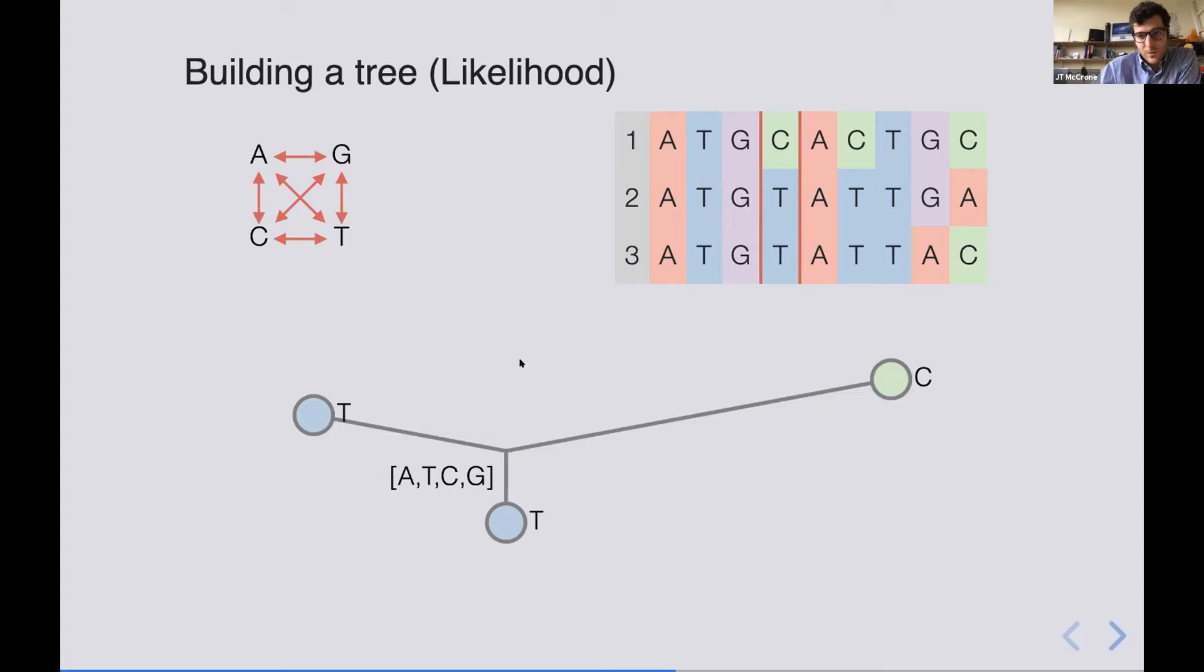And so this would suggest probably that there was a mutation here along this branch between T and C, or C and T, we don't know the direction in this case. And we can do this across all of the columns in the alignment, and we're trying to find the tree that makes all of these columns the happiest given our chosen model of substitution.